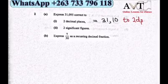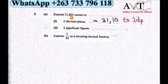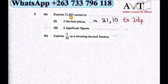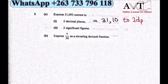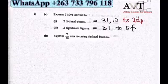To round 31.095 to two significant figures, we look at the first two significant digits. The next digit is 0, which won't affect the last significant digit, and there's a decimal point. So the answer to two significant figures is 31.